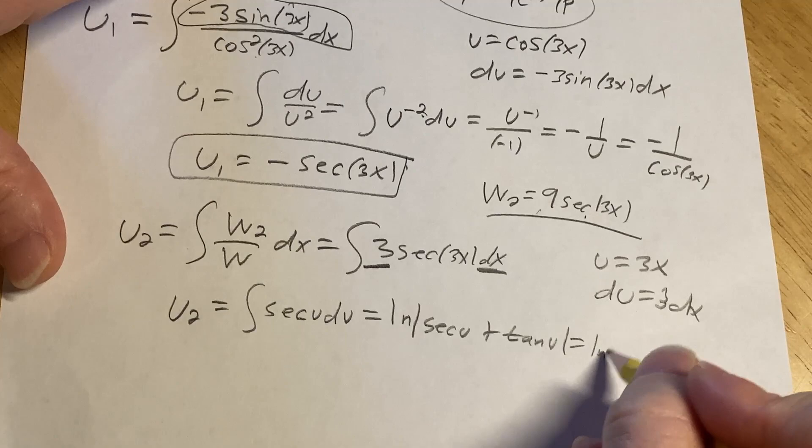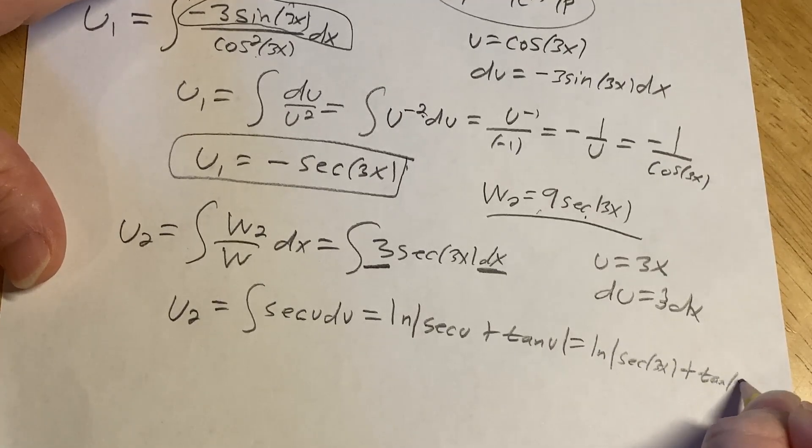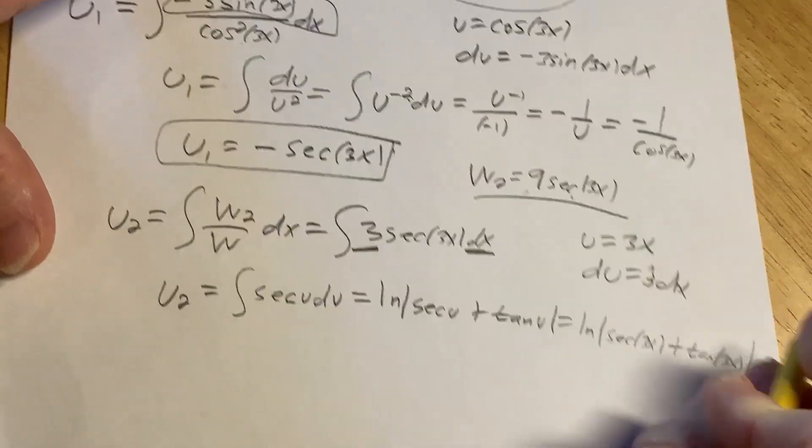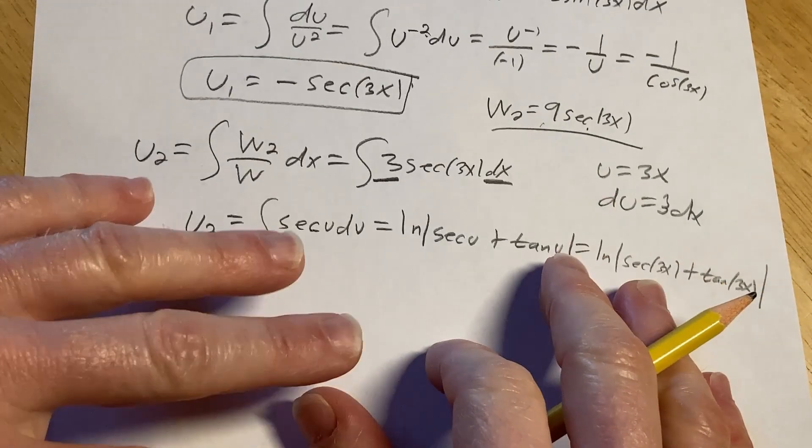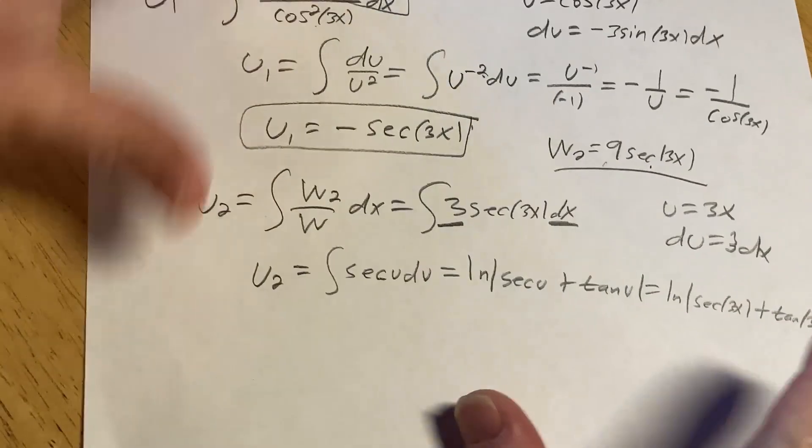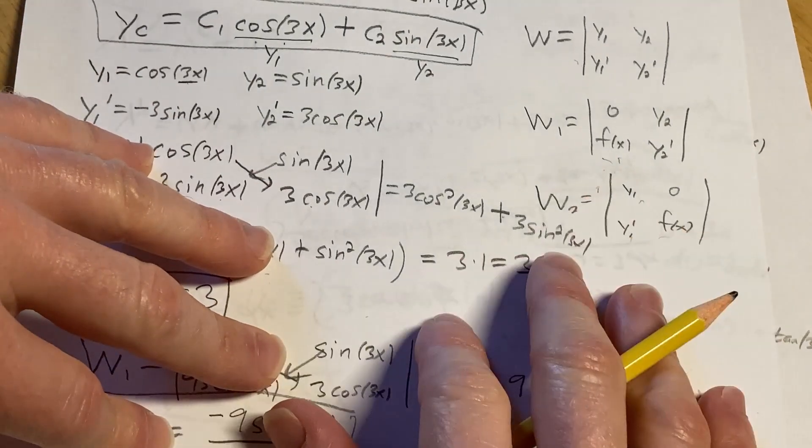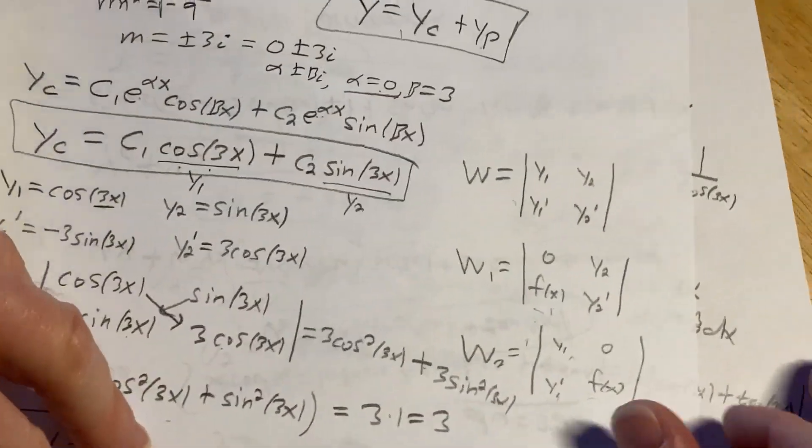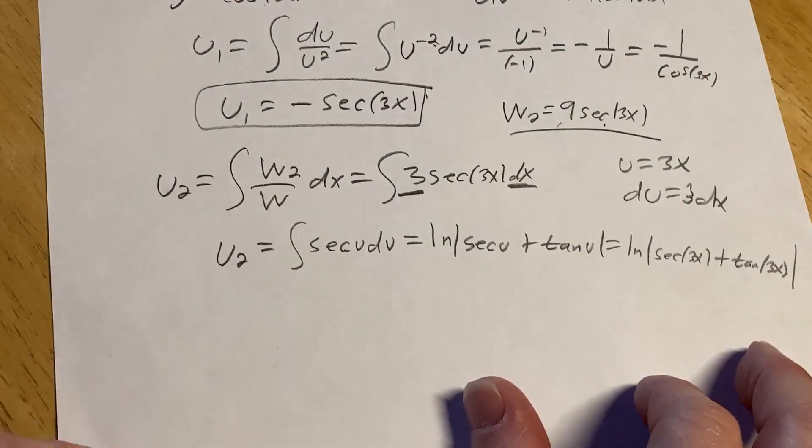So it's the natural log of secant of 3x plus tangent of 3x. And I'm going pretty fast. Imagine if I was going slower. It probably would take like 20 to 30 minutes. In a classroom setting, this takes like 20 to 30 minutes. Once you can do one of these on your own, though, like after you watch this video, you redo this problem on your own, you know variation of parameters. You've learned a differential equations technique.